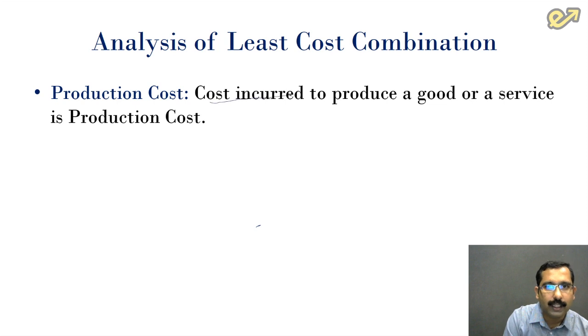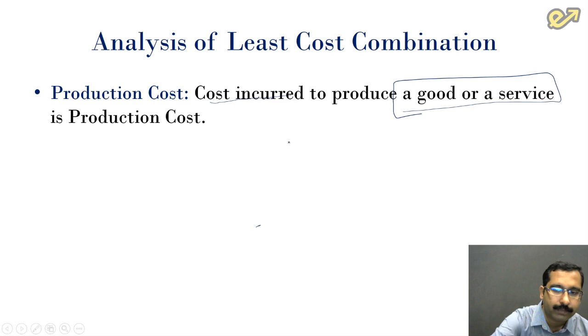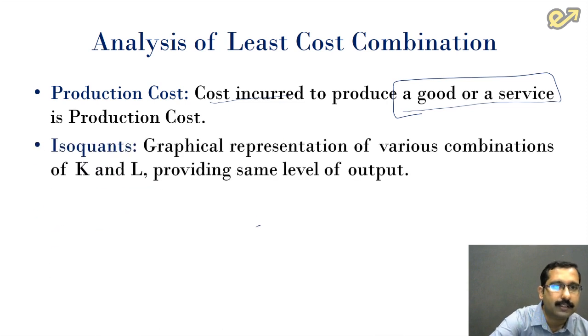The first point here is production cost. What do we understand by production cost? The definition goes like this: cost incurred to produce a good or a service. The total money that the firm spends for the production of goods and service becomes the production cost.